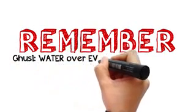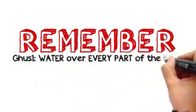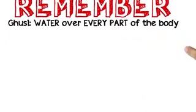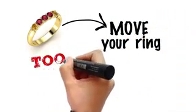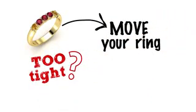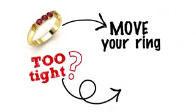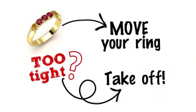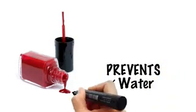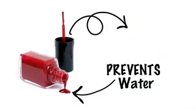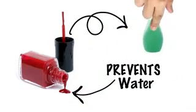Ghusl essentially means letting water run over every part of your body, so if you are wearing a ring you should move it. And if it is so tight that the water won't reach the skin underneath, then you have to remove it. Cosmetic items which form a barrier and prevent the water from reaching your skin must also be taken off.